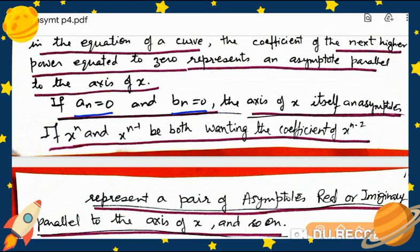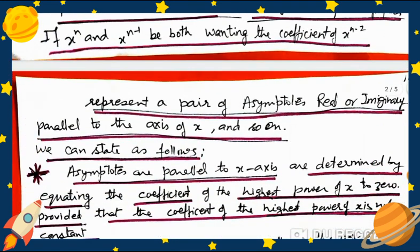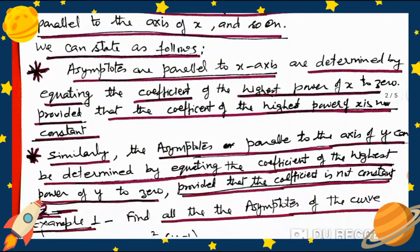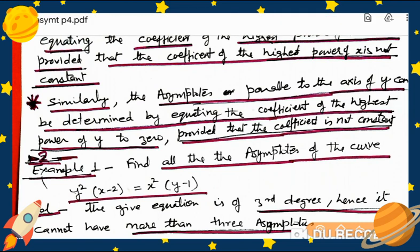If aₙ = 0 and bₙ = 0, then the axis of x itself becomes the asymptote. If both xⁿ and xⁿ⁻¹ are wanting, the coefficient of xⁿ⁻² represents a pair of asymptotes, real or imaginary, parallel to the axis of x, and so on. We can state it as follows: asymptotes parallel to the x-axis are determined by equating the coefficient of the highest power of x to zero, provided that coefficient is not a constant.